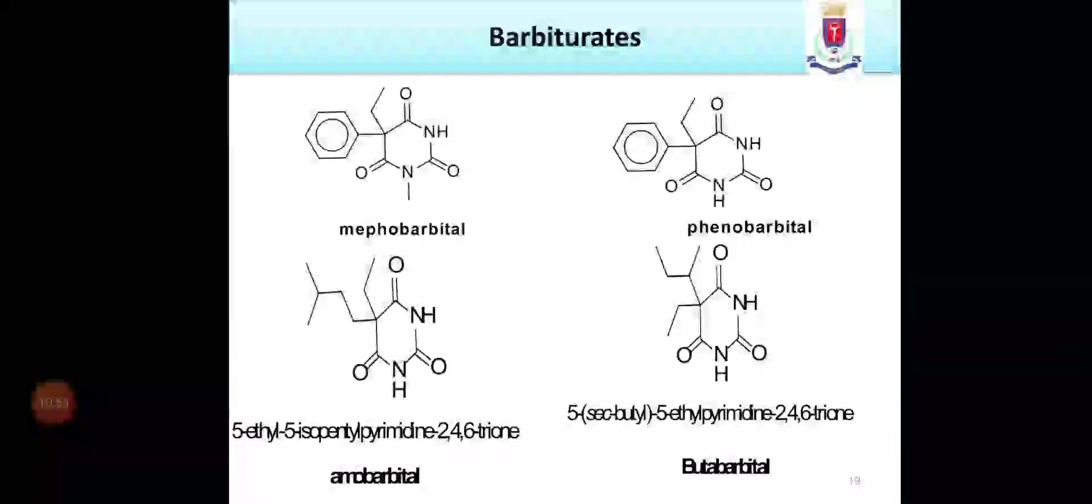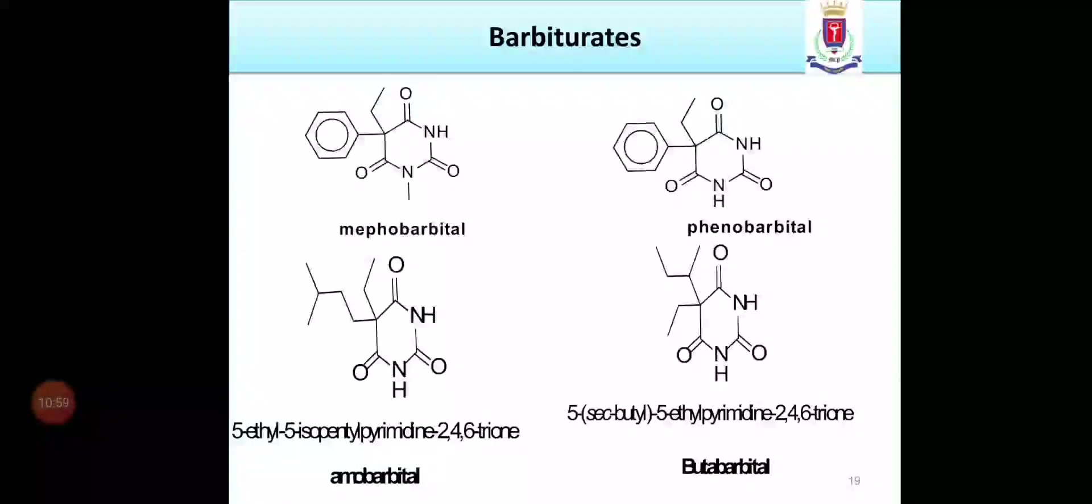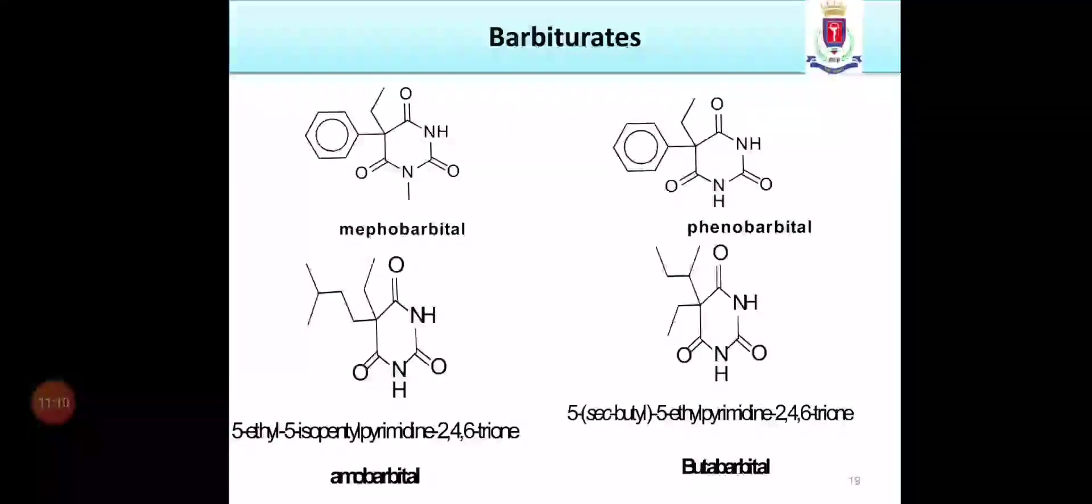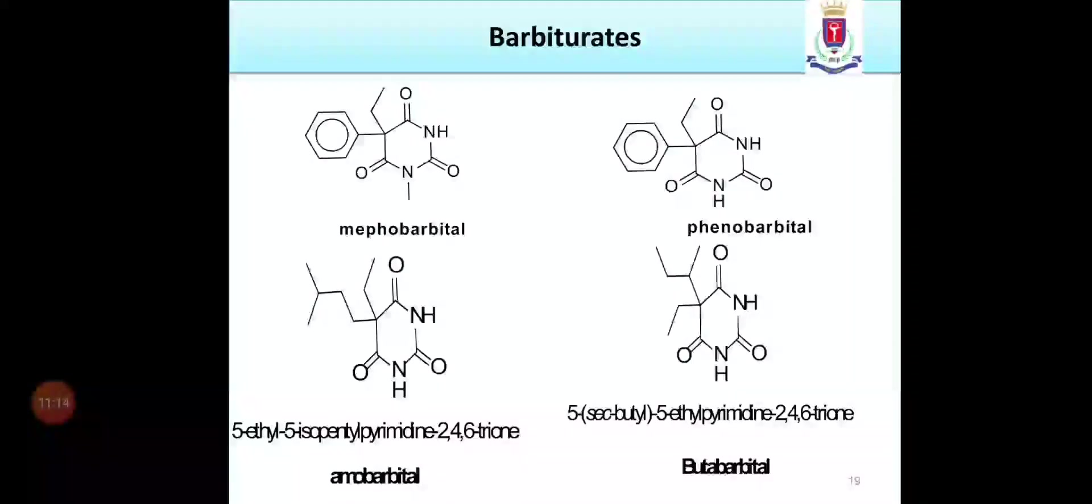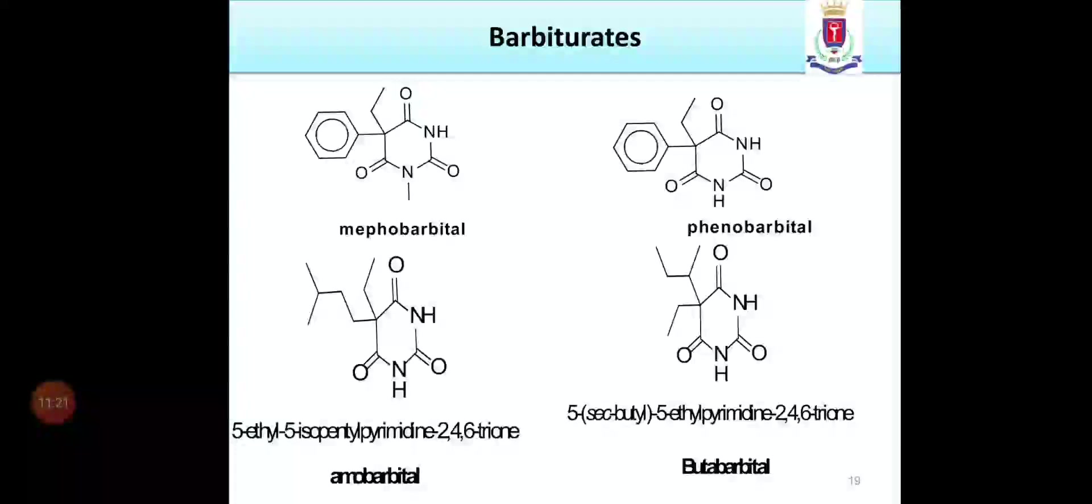These are some examples of barbiturates. The first is mephobarbital and the second is phenobarbital. It's a pyrimidine 2,4,6 trione derivative where the 5 position in mephobarbital is substituted with phenyl and ethyl and at 3 position nitrogen, the methyl group is present in mephobarbital which is absent in phenobarbital. This is the difference between mepho and phenobarbital. Both are the same, only the difference is of one methyl group.